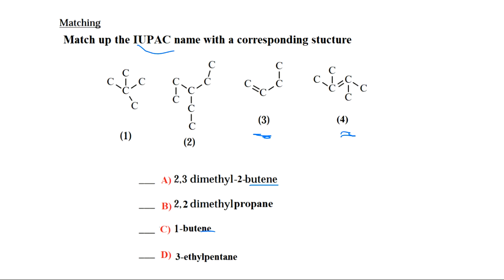Structure three has no substituents. If you number it: one, two, three, four — the double bond starts between carbon one and carbon two, so it's at carbon one. The longest carbon chain has four carbons, so it's a butene. This is 1-butene, and structure three goes to C.